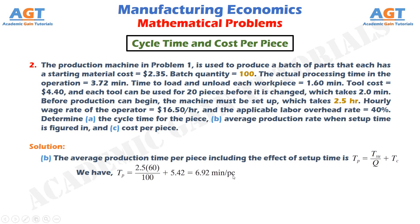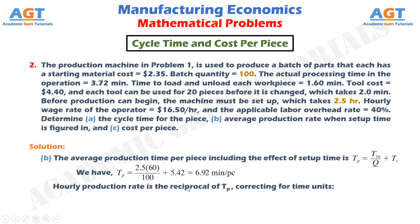Since the hourly production rate is the reciprocal of average production time t_p, correcting for time units: r_p = 60 / t_p. Where r_p is the average hourly production rate expressed in pieces per hour. Putting the value of t_p, we get an average hourly production rate of 8.67 pieces per hour.